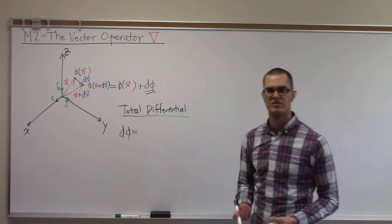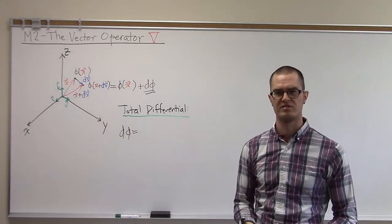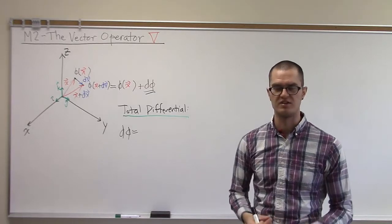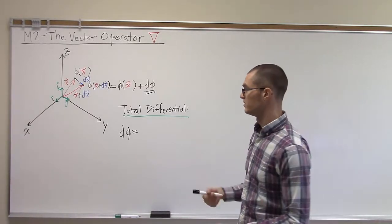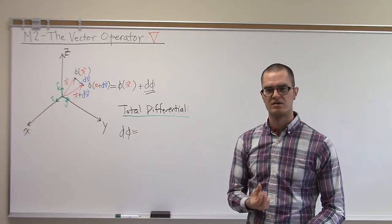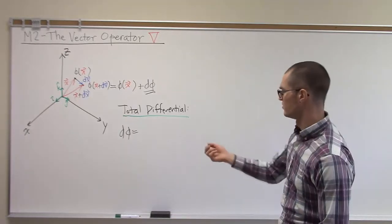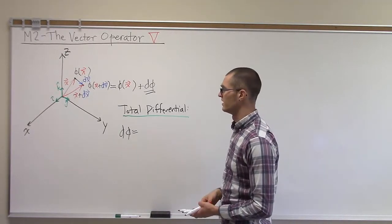It's going to be all of the changes with respect to all of the variables that phi is changing with respect to. So in this case, basically just x, y, and z. And each of those changes per unit length multiplied by the distance we went, so the components of dx.